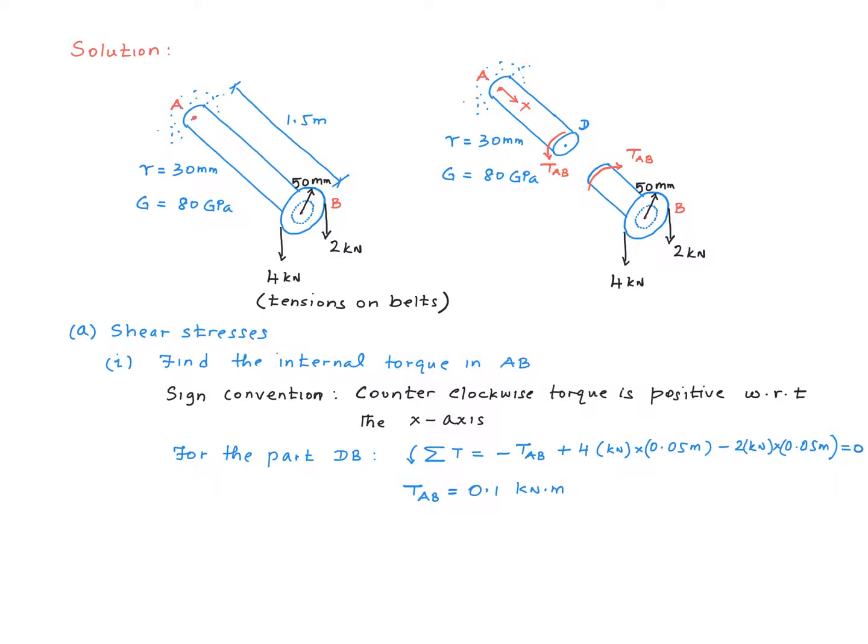The torque due to 4 kN is 4 kN multiplied by 0.05 m. The direction is counterclockwise. And similarly, the torque due to 2 kN is 2 kN multiplied by 0.05. But it acts in the clockwise direction on the shaft. Simplifying this, we get a value of 0.1 kN meter for the torque TAB. And it goes without saying that TAB is constant throughout. I could have taken the section at any point between A and B and I would have come up with the same value. And therefore, TAB is constant throughout.